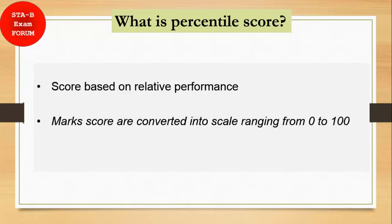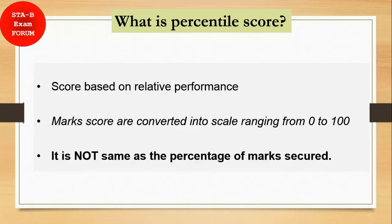So the second thing related to percentile score is that whatever the original score, the marks which you have obtained in the exam out of 120, is converted into a scale ranging from 0 to 100 on that particular session. And one important thing in which most of the students are confused is that it is not the same as the percentage of marks scored. So if you are having a percentile score of 78, it doesn't mean you got 78 marks or 78 percent of 120. DRDO will release your original marks after the exam, hopefully.